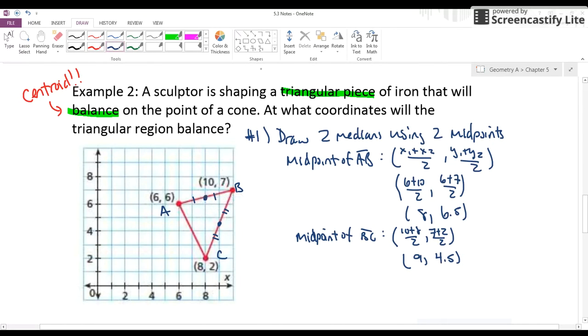Connect the midpoint to the opposite vertex. So take that midpoint and connect it to the vertex. So there's my first median. And then here is my second median.